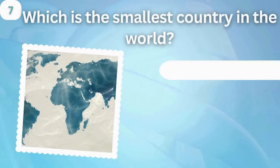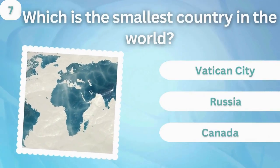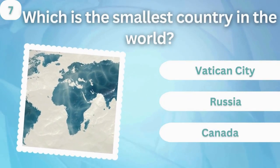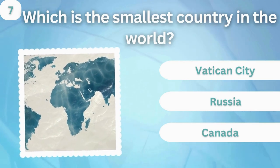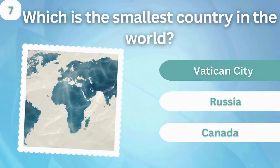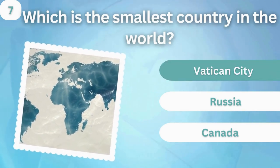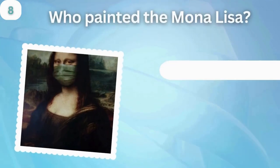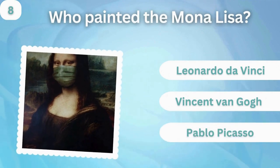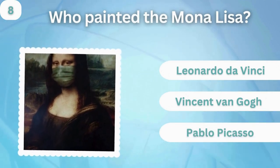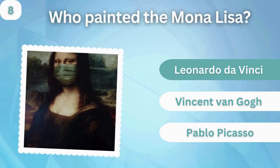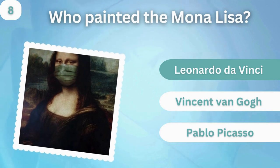Which is the smallest country in the world? Vatican City, Russia, or Canada? Vatican City. Who painted the Mona Lisa? Leonardo da Vinci, Vincent Van Gogh, or Pablo Picasso? Leonardo da Vinci.